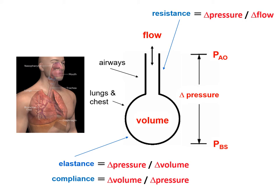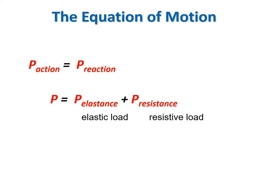You need to memorize the simple equations for resistance, elastance, and compliance. Note that this model can take several forms. It can be graphical, like the drawing in this slide. It can be physical, like an actual tube attached to an elastic container—the classic straw and balloon model. Or it can be mathematical, expressed in terms of pressure, volume, and flow as functions of time.